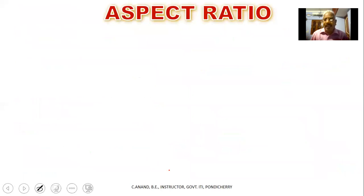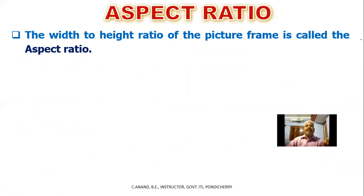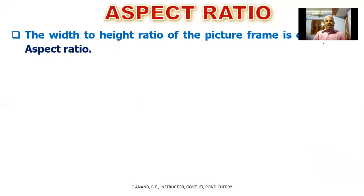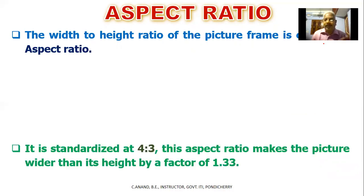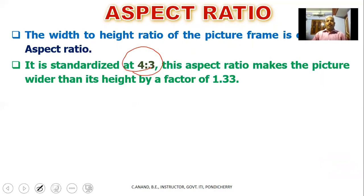Aspect ratio: the width-to-height ratio of a picture frame is called the aspect ratio. For black-and-white CRT TV, the aspect ratio is 4:3 — width is 4 and height is 3.